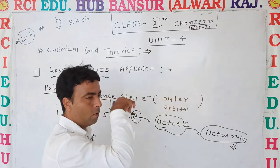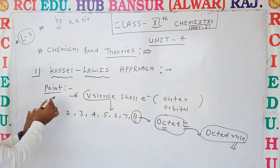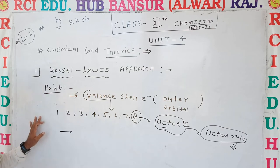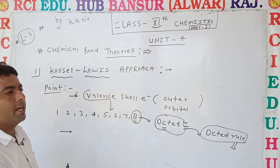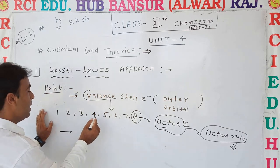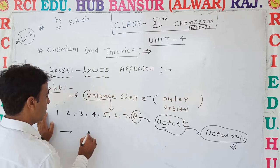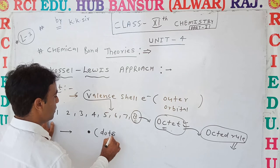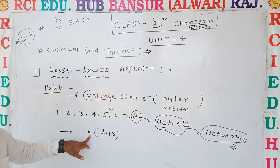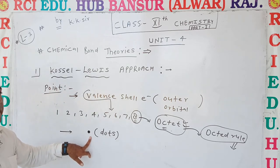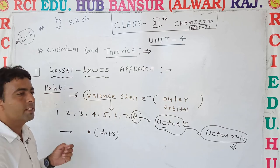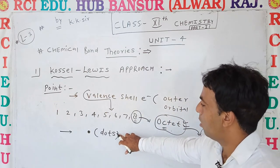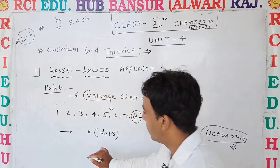According to this theory, electrons are represented by a sign — that is, by dots. According to Lewis, electrons are represented by dots.